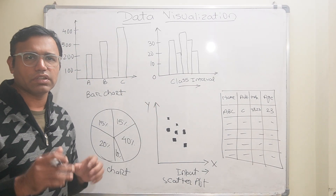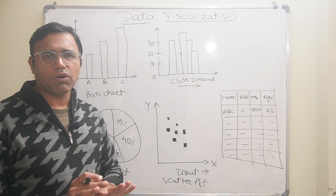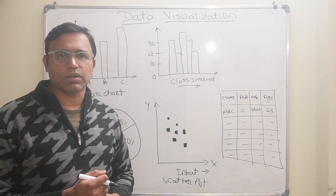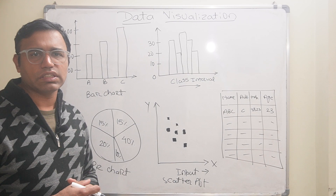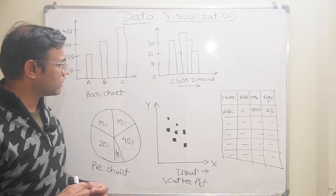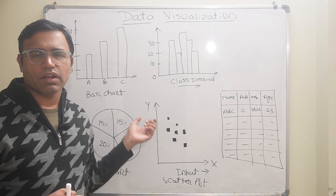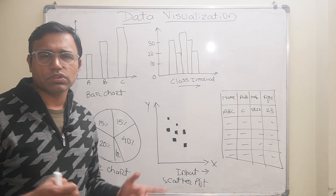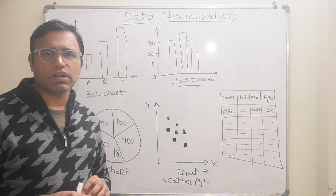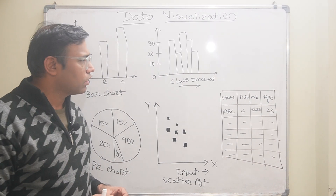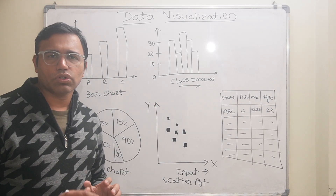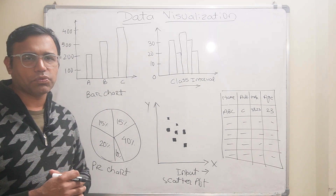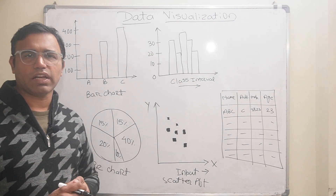To summarize, representing data in the form of images is data visualization. It makes data more readable, easy to analyze and interpret. There are various formats — pie chart, bar chart, scatter plot, heat map, donut, histogram, and many more graphical representations. I hope you understand what is data visualization and why it is needed. If you like the video, please subscribe, like, and share. Thank you.